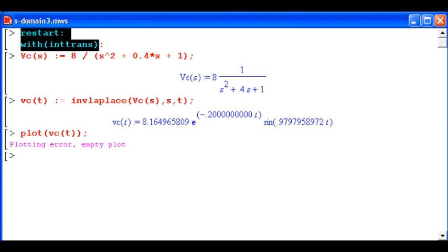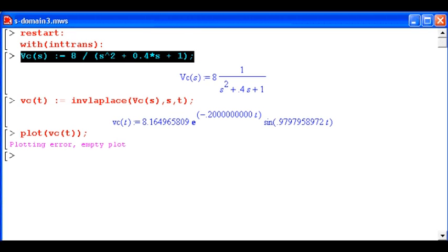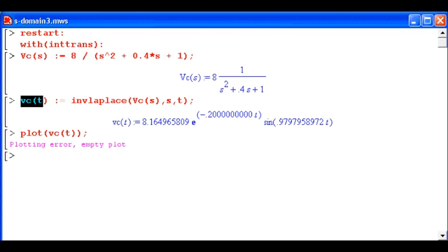Let's take a look. This is standard stuff. Start with the restart. Say we need to do inverse Laplace and Laplace kind of stuff. Here I've entered my equation for VC of S. Here I'm saying that VC of T is the inverse Laplace transform of VC of S, going from the S variable to the T variable.